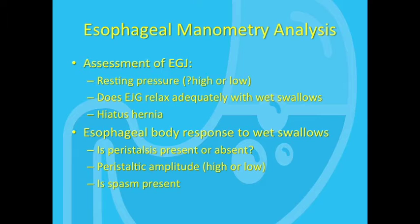Esophageal manometry analysis is really concerned with two principal factors. First, we are concerned about the EGJ: is the resting pressure high or low, and does the EGJ relax adequately with wet swallows? Secondly, we are concerned about peristalsis in the esophageal body: is peristalsis present or absent, is the peristaltic amplitude high or low, and is there spasm? With the advent of high-resolution manometry, it's now possible to answer these questions with a great deal of precision.